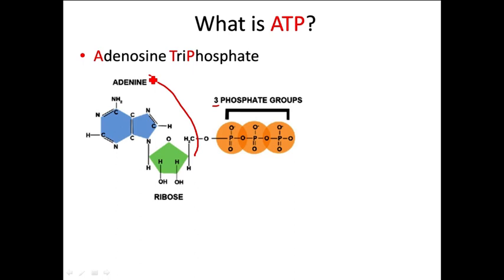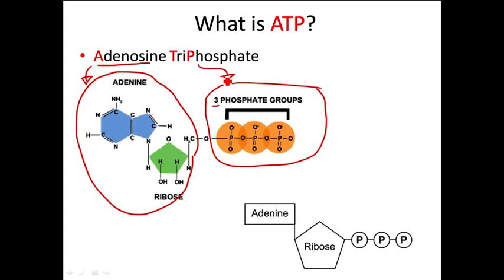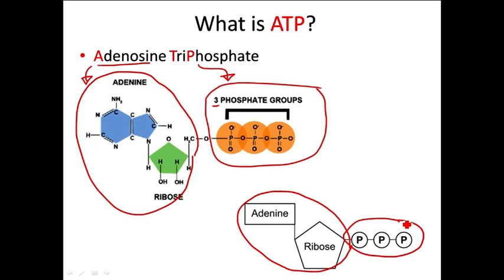Let's parse this down a little bit. This part right here is the adenosine portion of the molecule — the adenine and the ribose together make up adenosine. And then these, as you might suspect, are the three phosphates, the triphosphate. That's a pretty unwieldy thing to write out, so here is a shorter way to write it using some shapes: here is the adenosine part, and here are the three phosphate groups, the triphosphates.